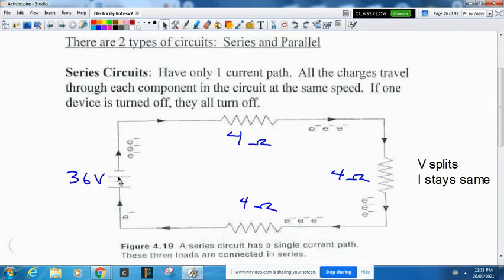Here you can see there's your power source and three resistors with electrons going through. In this case, the voltage splits between the three resistors, but the current is the same everywhere in the circuit.